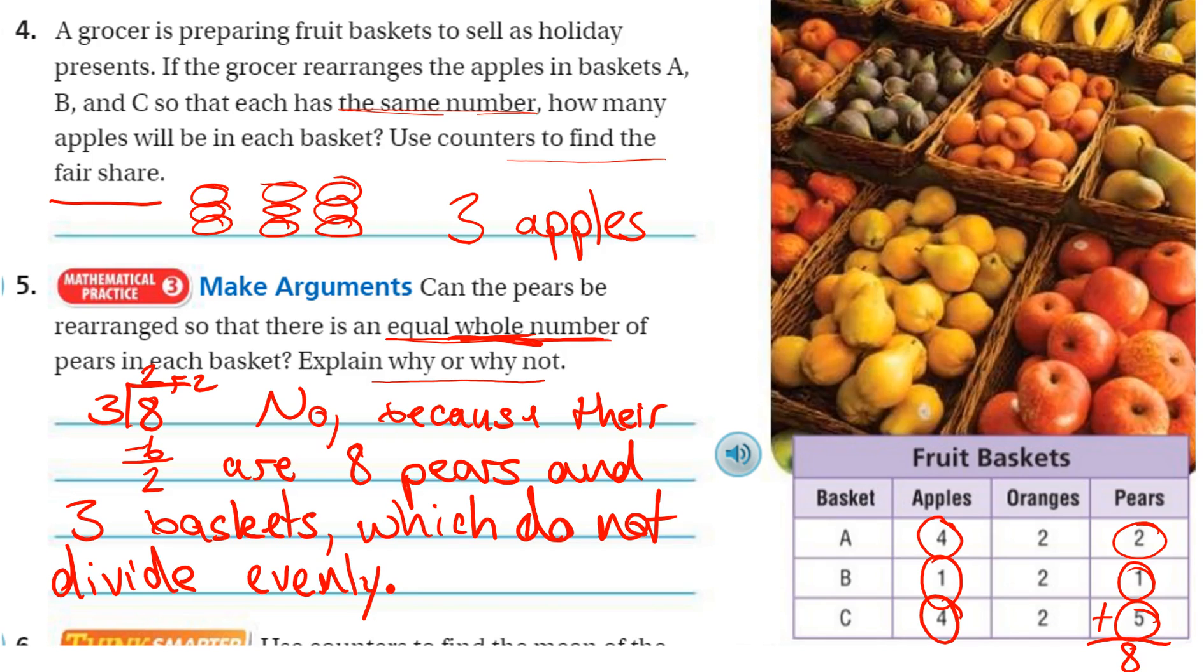Each basket would have two, but then there would be two pears left over, but three baskets, and they said they wanted all of them to have the same number of pears. So you'd have two pears to split between three baskets, and you couldn't take a whole pair and split it, two whole pears and split it amongst three baskets.